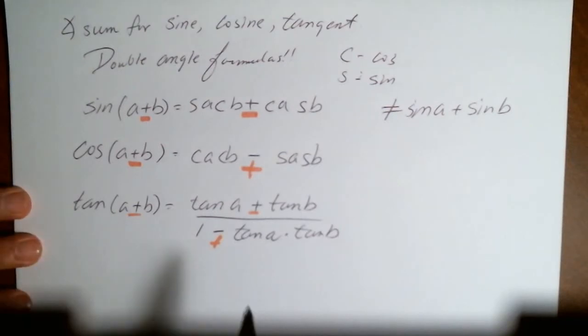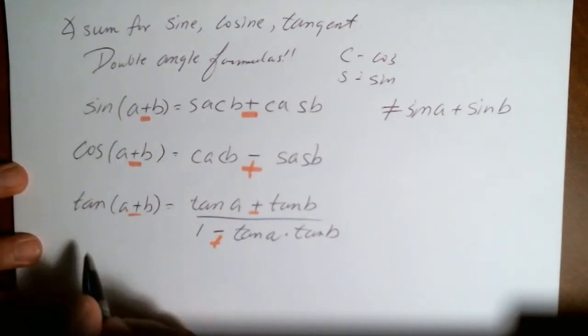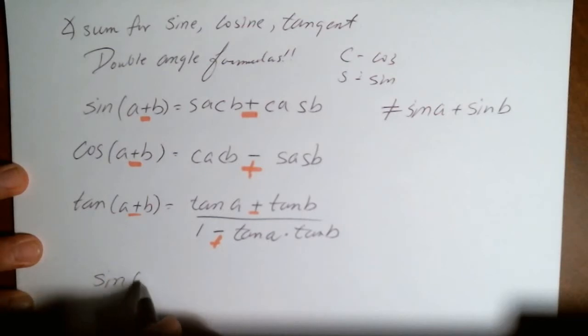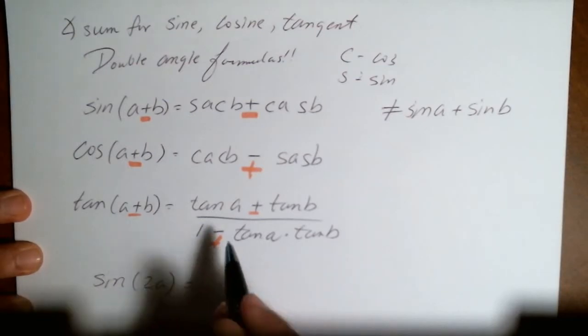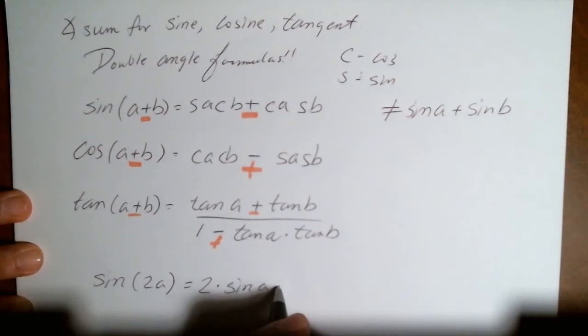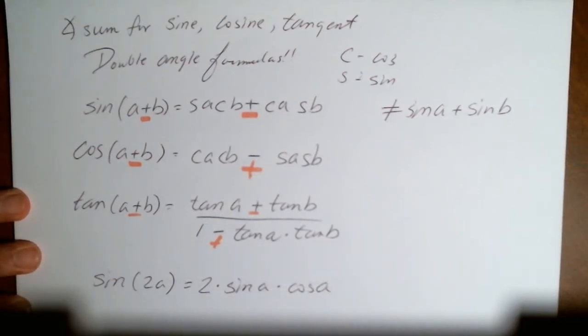So let's do the double angle now. Sine of 2A. What does that equal to? The way I like to remember is the double angle for the sine is you distribute the 2 out to the front. So it becomes 2 times the sine of A, and multiplied now by the cosine of the angle, whatever that angle was.